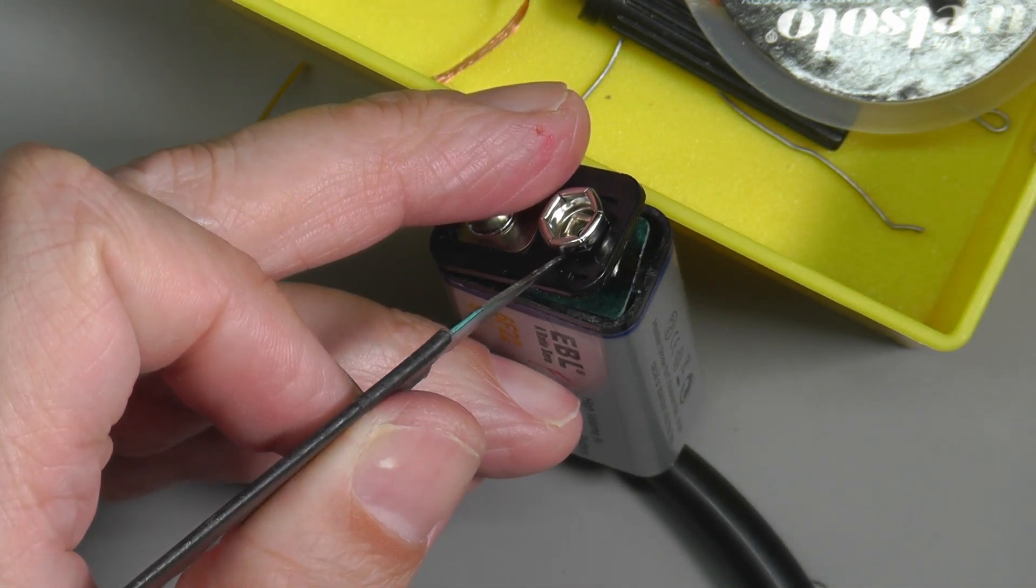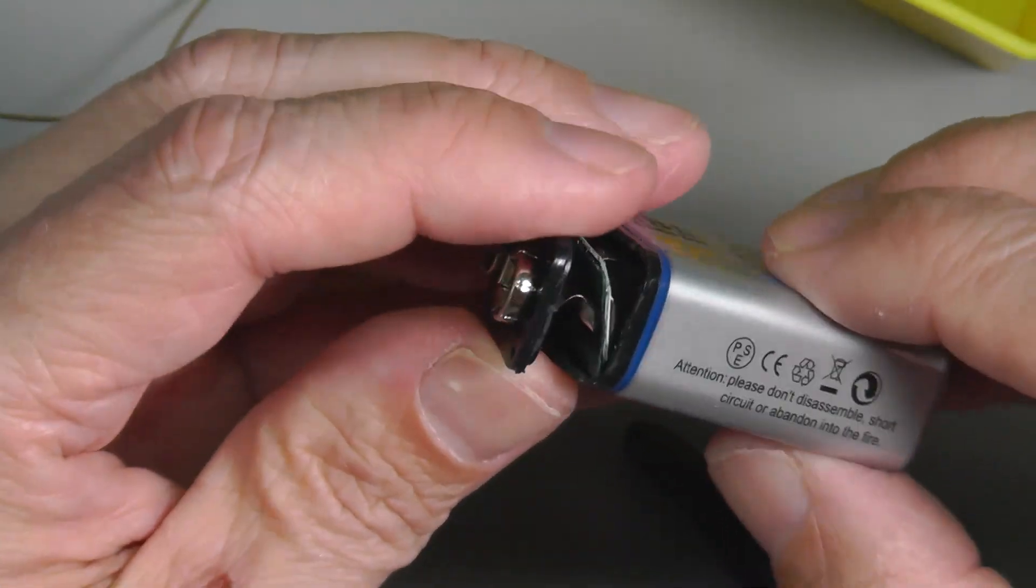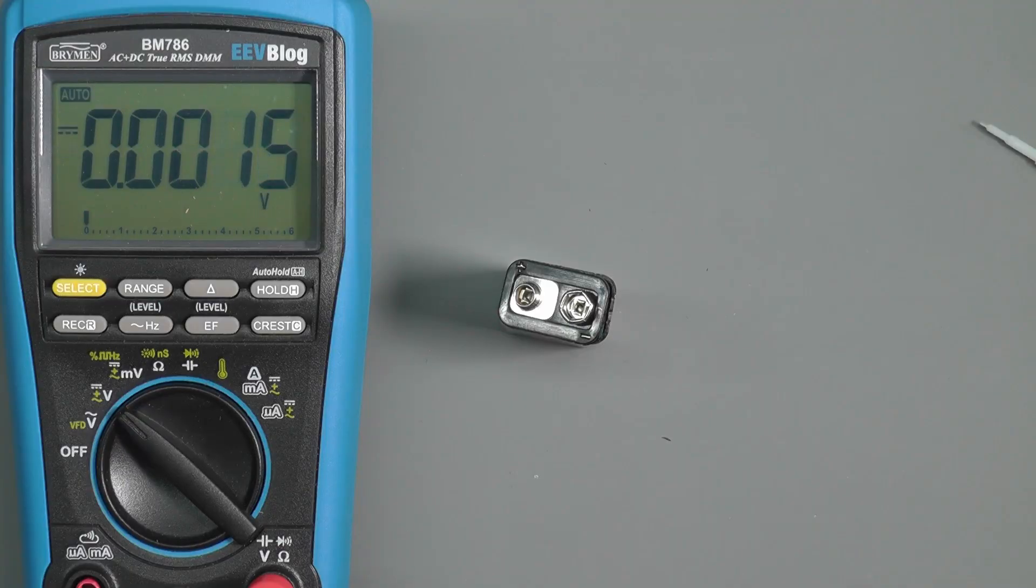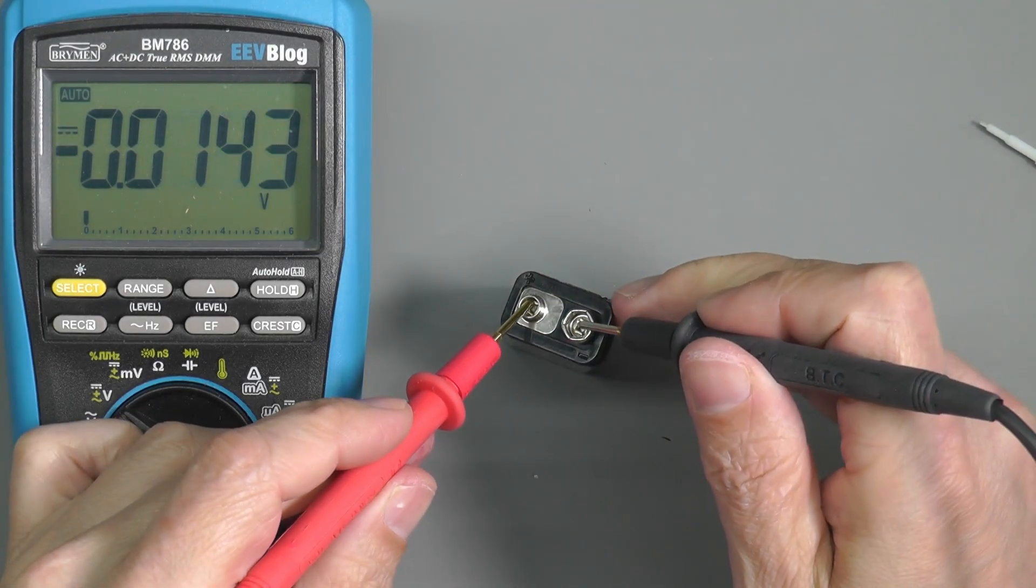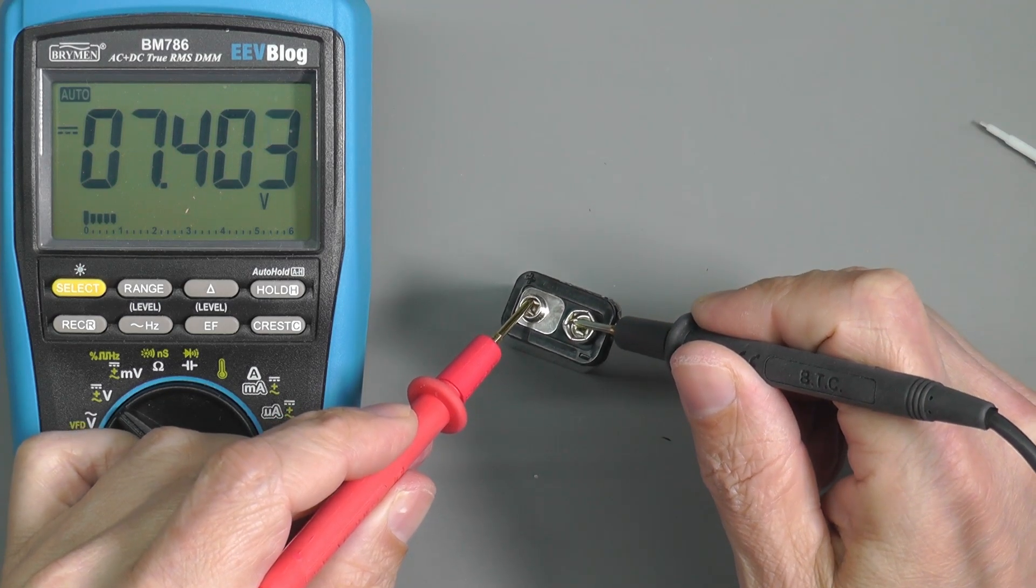There we go, that looks to be well and truly soldered on. So let's check and see if we've got battery voltage. And we do! So I think I can wrap it back up again.